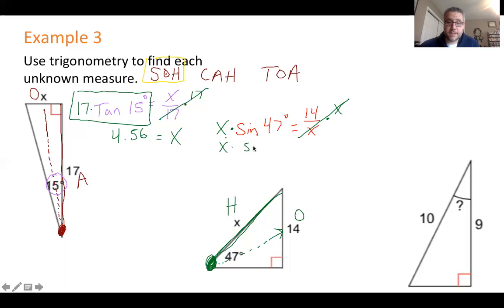Let me do a rewrite. x times sine 47 equals 14. So now you're asking yourself the question, how do I get x by itself? Well, you have to do the inverse process. To undo multiply, you divide. So you divide both sides by sine 47.